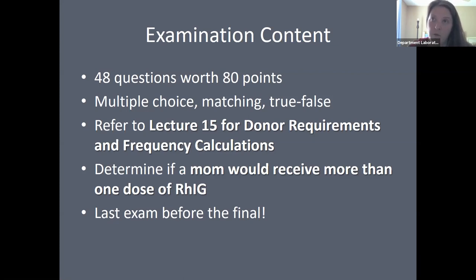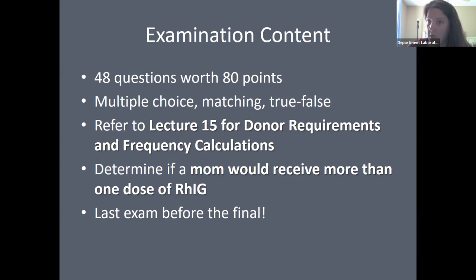You will have some frequency calculations on this exam. Make sure you are familiar with the percent of population that have the D antigen. 85% of your population is D positive, meaning 15% is D negative. For all other antigen frequencies, they will be provided for you — you don't need to memorize those.